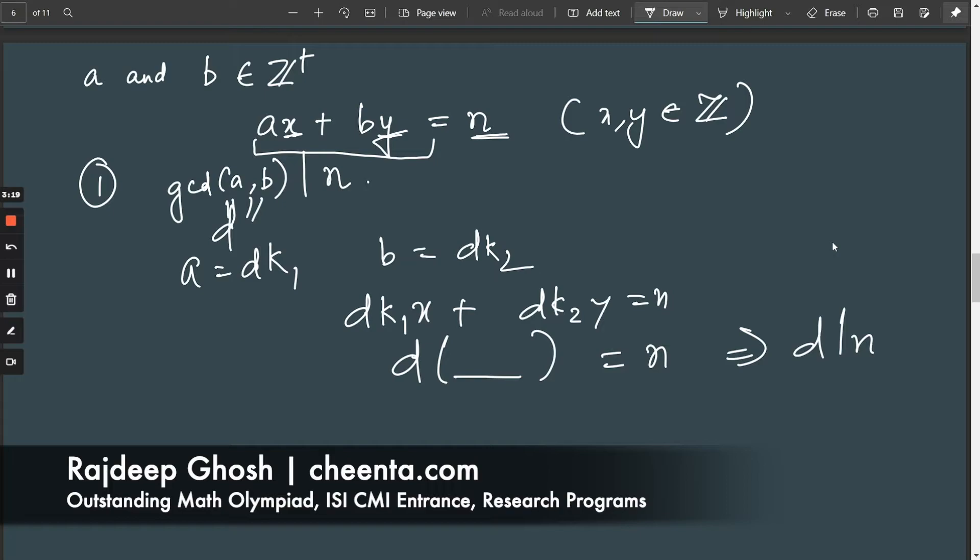Now, it doesn't seem that big of a stretch to posit that even though we already have that every number occurring in this set, ax + by where x and y range freely over Z, every element is a multiple of the gcd. It doesn't seem that big of a stretch to posit that every multiple of the gcd is actually here. So it's sort of like an if and only if thing. All multiples.